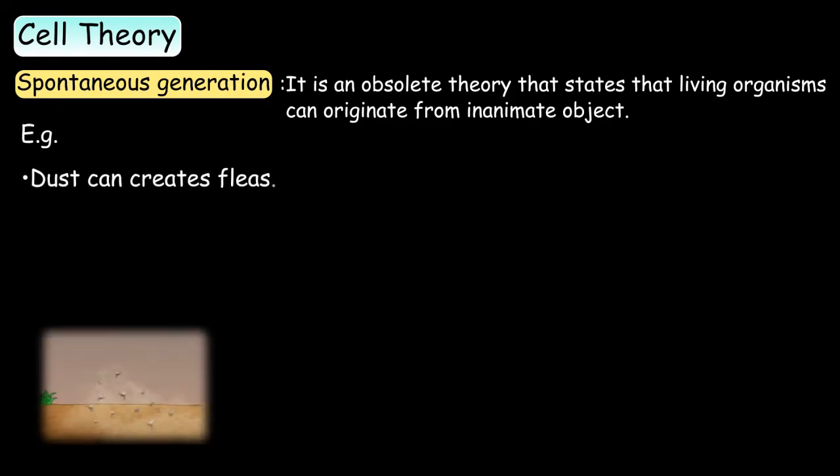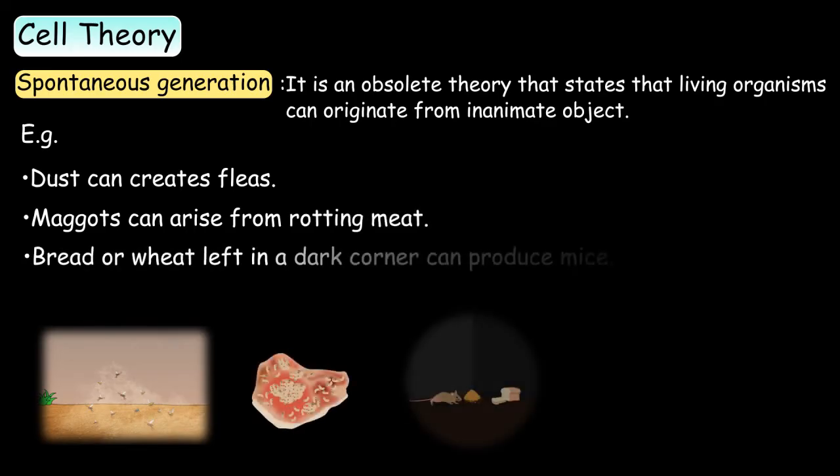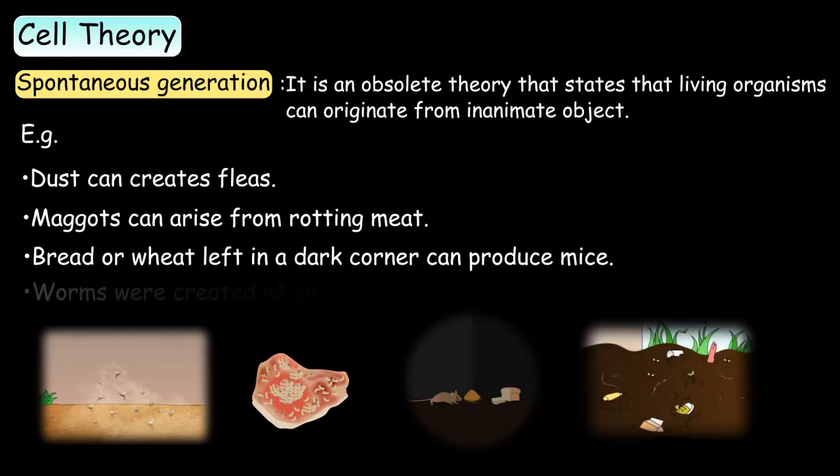dust can create fleas, maggots can arise from rotting meat, bread or wheat left in a dark corner can produce mice, and worms were created when dirt and water made mud.